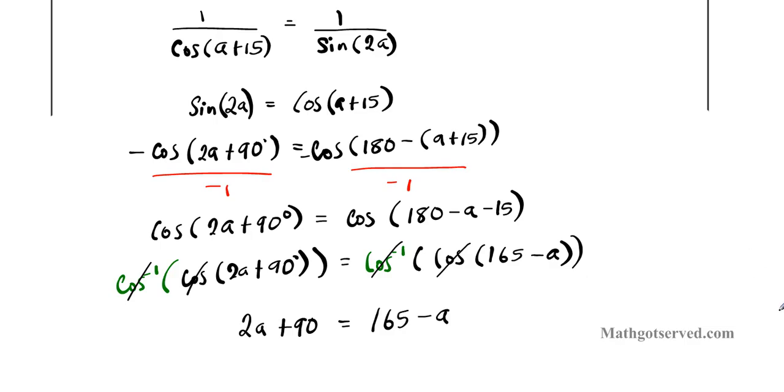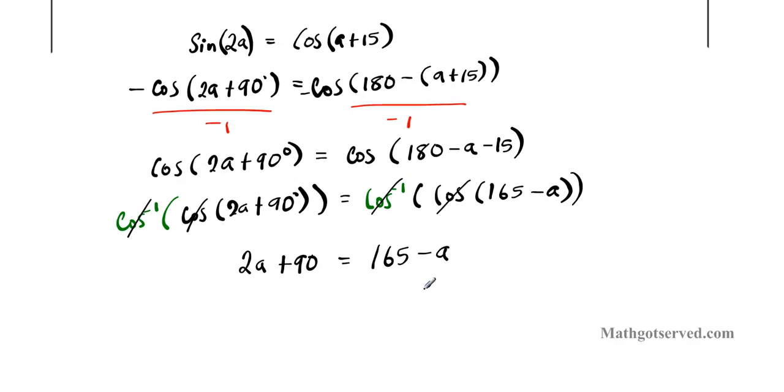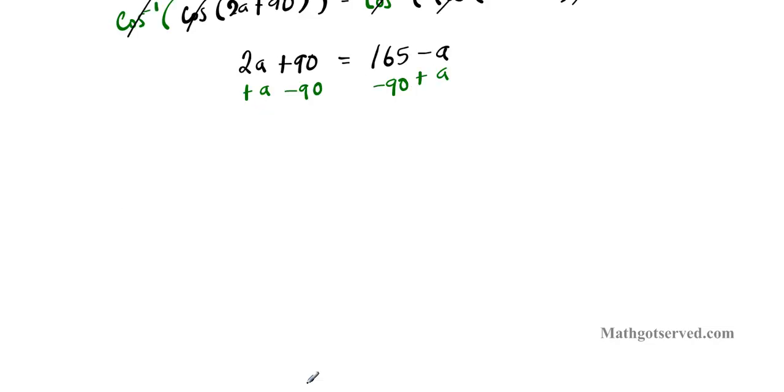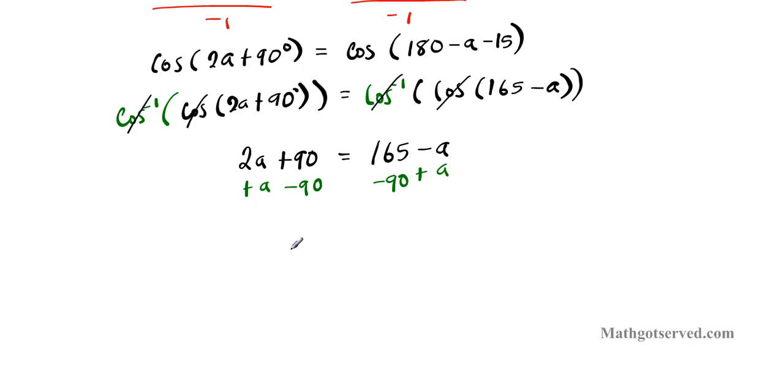So it's just elementary algebra from here on out. You add a to both sides. And subtract 90 from both sides. And then you're going to have, what are you going to have? You're going to have 3a equal to 165 minus 90 is 75. Divide both sides by 3. And then you have a is equal to 25.